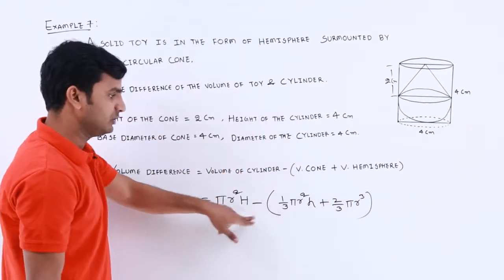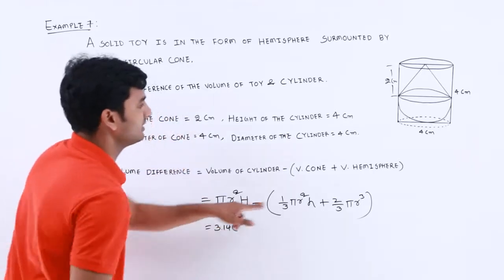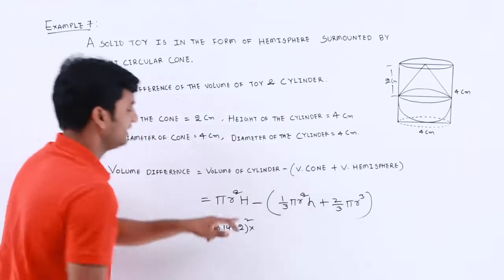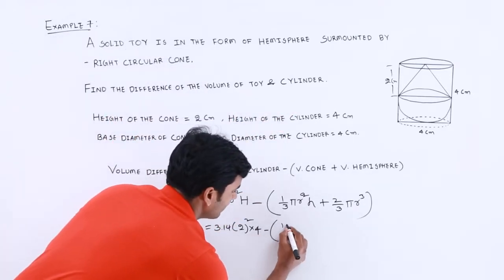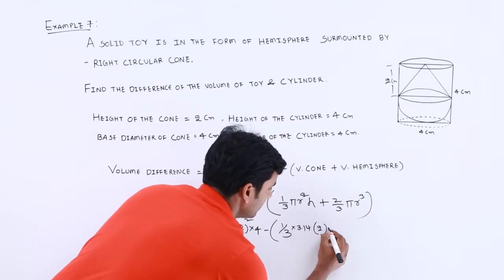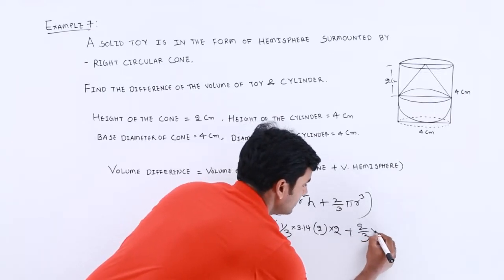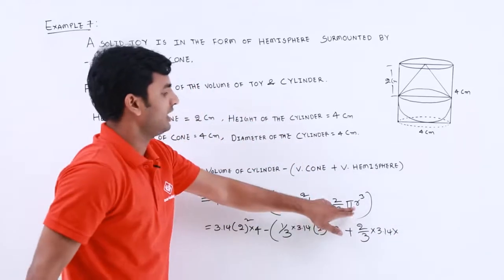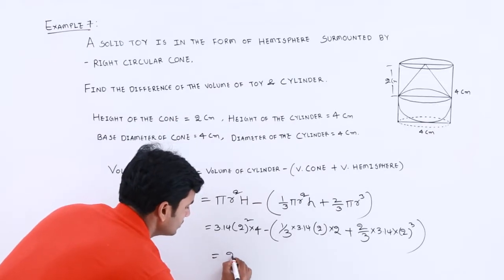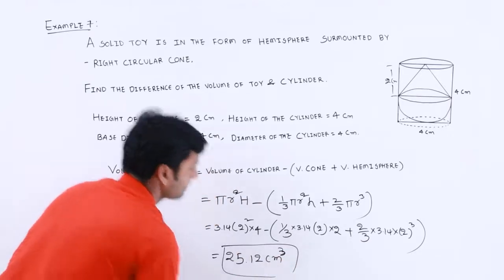Now substituting the values: π = 3.14, diameter = 4 cm so radius r = 2 cm, height of cylinder H = 4 cm, height of cone h = 2 cm. The expression becomes: 3.14 × 2² × 4 − (1/3) × 3.14 × 2² × 2 + (2/3) × 3.14 × 2³. Solving this gives approximately 25.12 cm³, which is the difference between the volume of the cylinder and the volume of the toy.